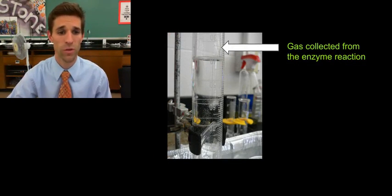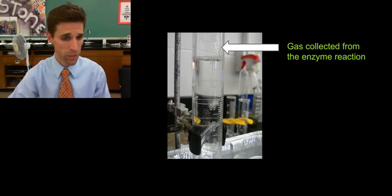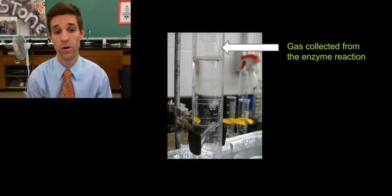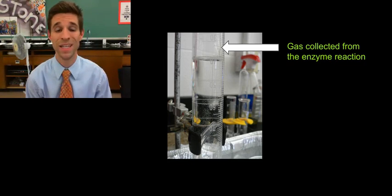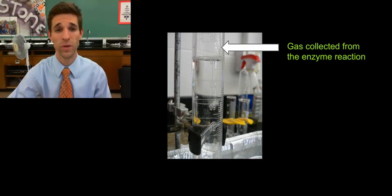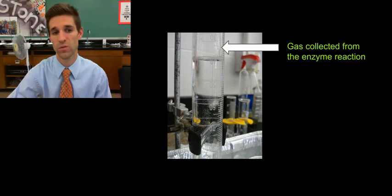So then here's another look, an up close look of the gas bubbling through the chamber, or through the gas collection chamber, and then displacing some of that water, and through the graduated marks on the side of the graduated cylinder, we can actually get milliliters of gas produced, and we can take a reading every 15 seconds for a couple of minutes to actually get a rate or a speed at which the gas is being produced.